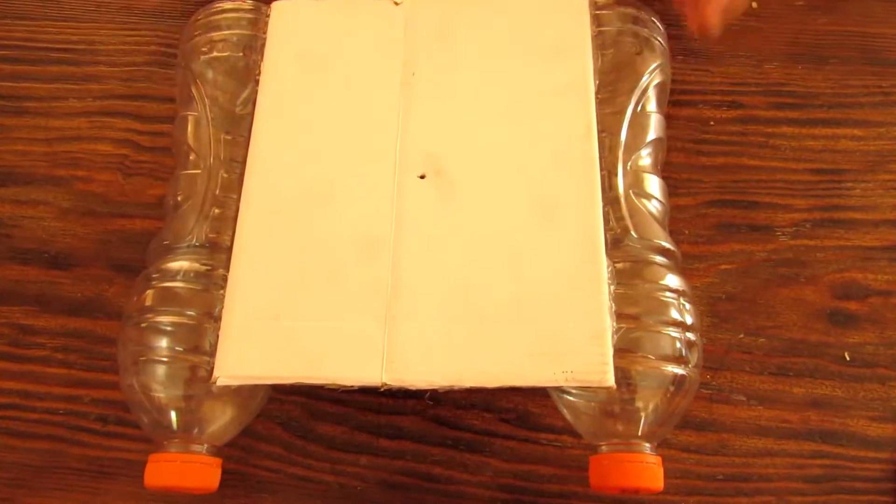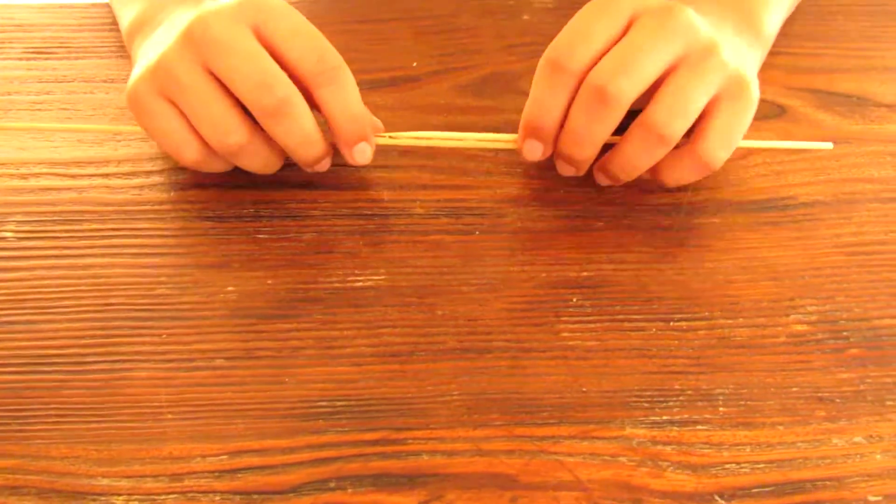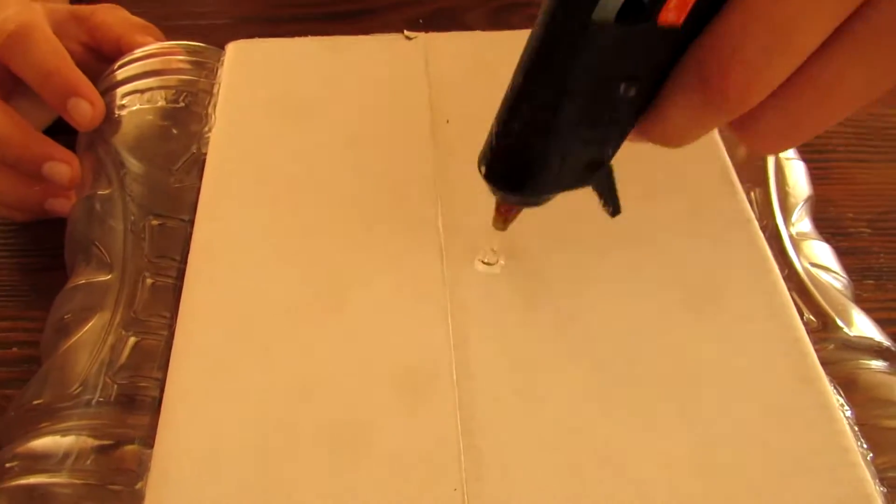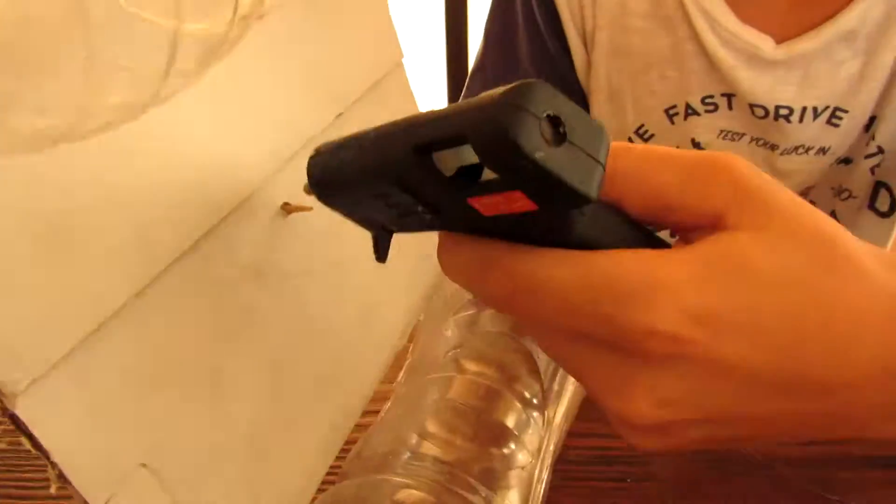Now you're going to take both your skewers and glue them together and then put some clear tape on top to cover the hot glue. Now you're going to put some hot glue on top of the hole that you made earlier and stick your skewer in it. Flip it over and then put some hot glue on the other side.